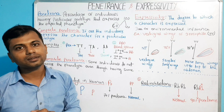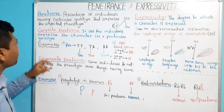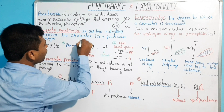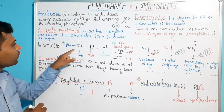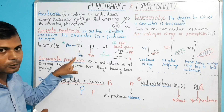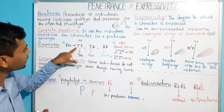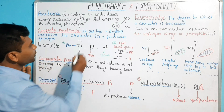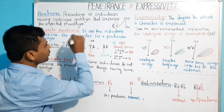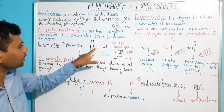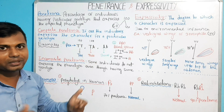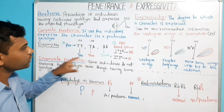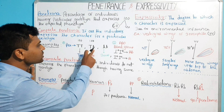We will explain this by taking the example of Mendel's pea plant. Suppose there are 100 pea plants having the genotype TT (capital T, capital T) — all are tall. So, the genotype TT has 100% penetrance. Similarly, suppose there are 100 pea plants having the genotype Tt (capital T, small t) — all plants are tall. So, this genotype also has 100% penetrance.